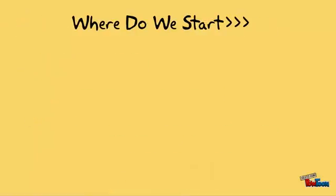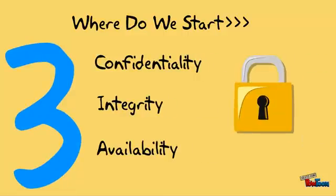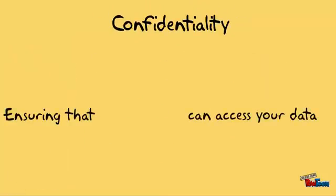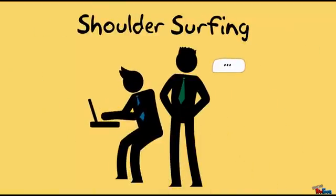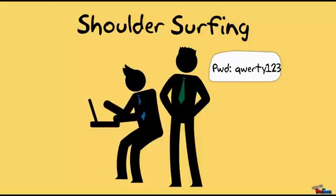So where do we start? Protecting your IT assets starts from three simple principles: Confidentiality, Integrity, and Availability. Confidentiality means securing your information so that only authorized personnel will be able to access and view them. This can be as simple as being aware of your surroundings to make sure that nobody is peeping at your screen from behind, which is known as shoulder surfing. You may also use a privacy filter on your computer to minimize the chances of shoulder surfing. Other examples include setting technical access controls such as account logins with strong passwords.